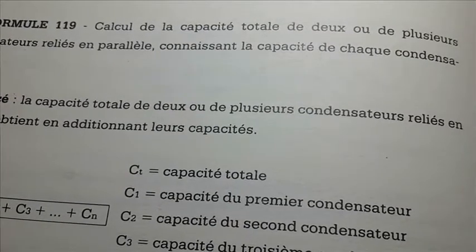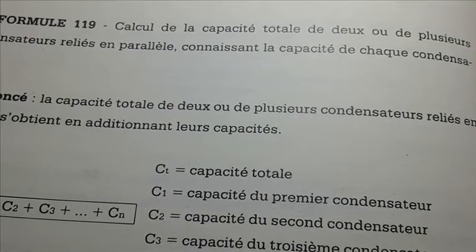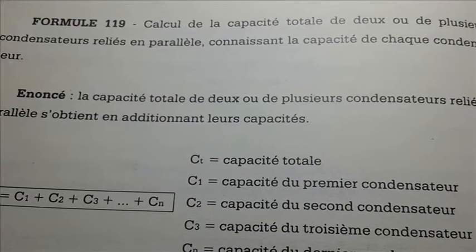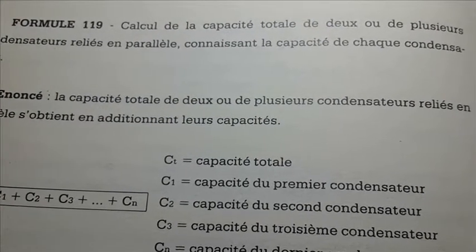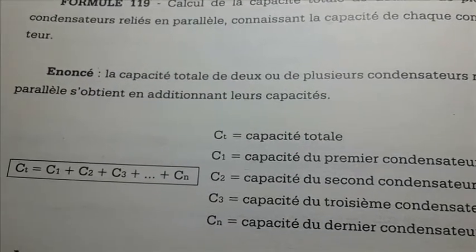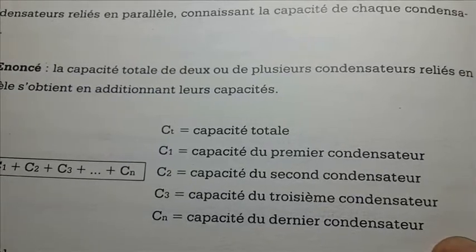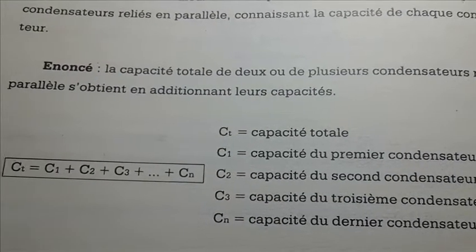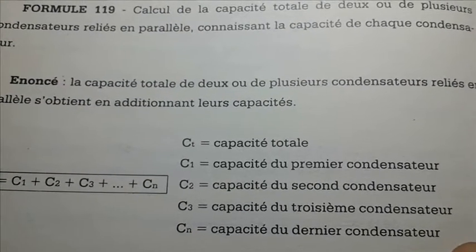Calcul de la capacité totale de deux ou de plusieurs condensateurs reliés en parallèle, connaissant la capacité de chaque condensateur. La capacité totale de deux ou de plusieurs condensateurs reliés en parallèle s'obtient en additionnant leur capacité.